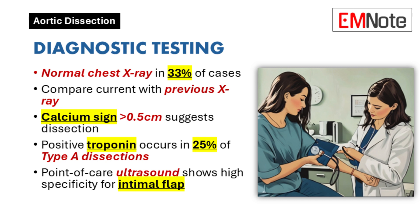Point-of-care ultrasound (POCUS) can be a game changer. Think of it like detecting retinal detachment of the torso — you visualize the intimal flap, and you know it's a dissection. While sensitivity isn't perfect, specificity is very high, so seeing that flap gives you high confidence. POCUS can also reveal a pericardial effusion, which could mean the dissection is spreading backwards.